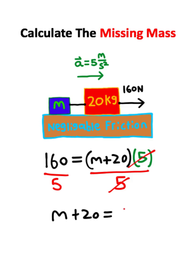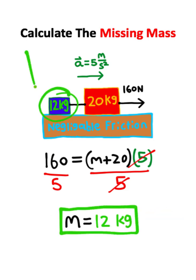160 divided by 5 is the same thing as 32. Now what I can do from here is subtract 20 on both sides of the equation, and 32 minus 20 is equal to 12. So the unknown mass in this problem is 12 kilograms.